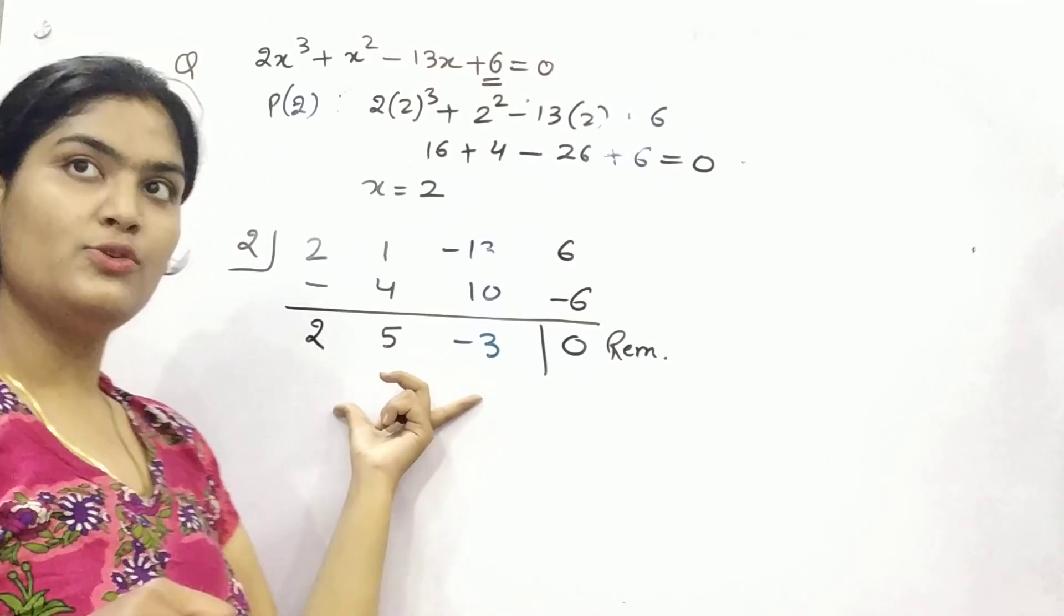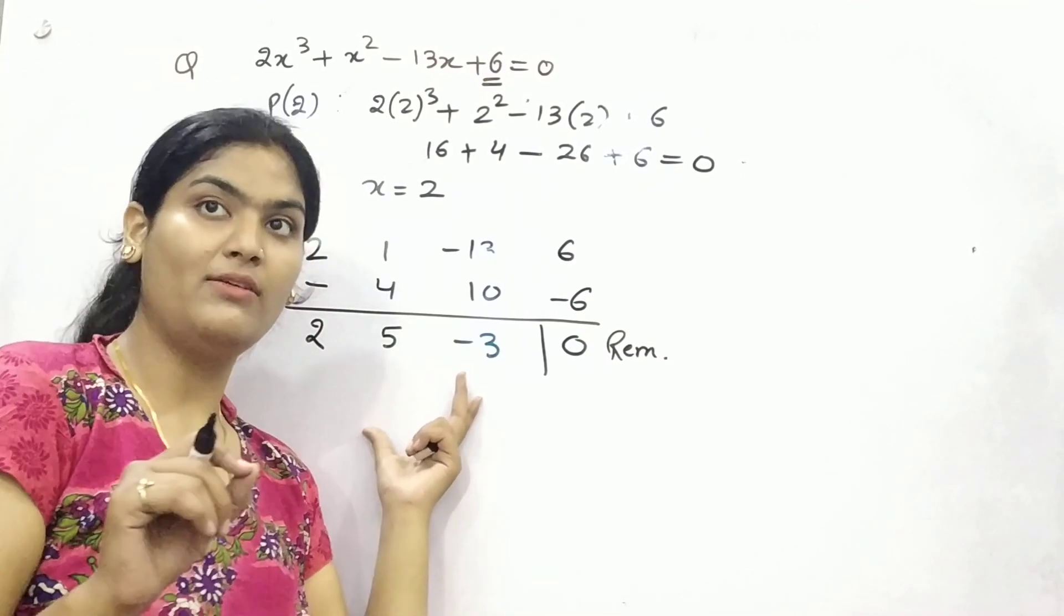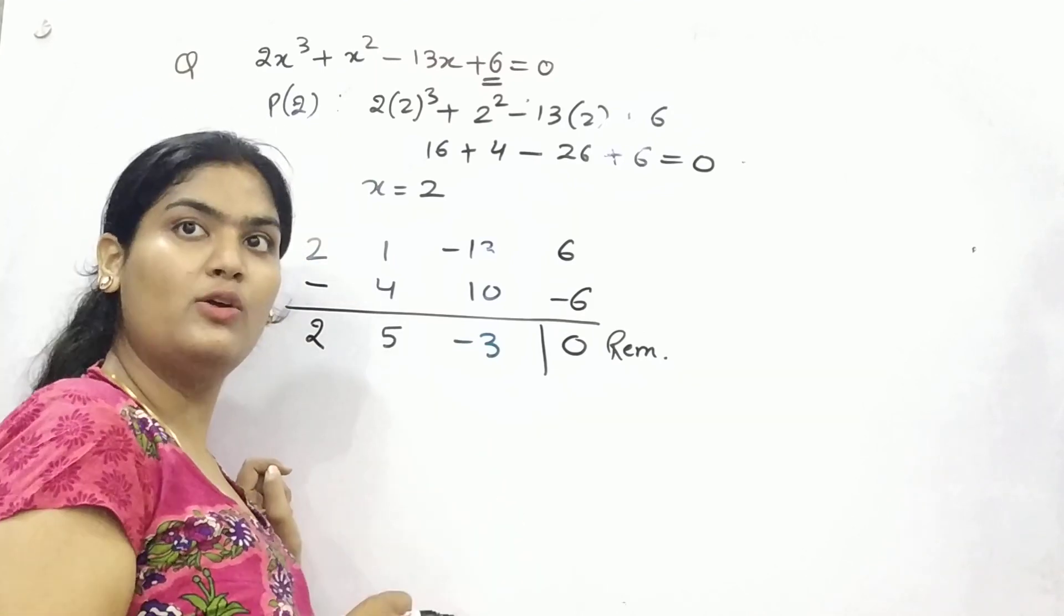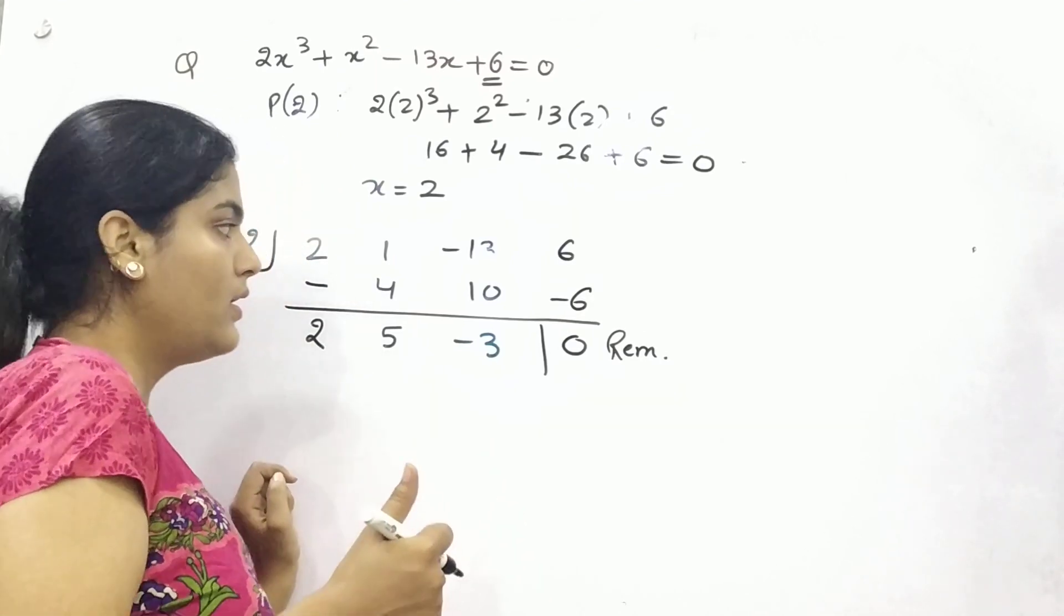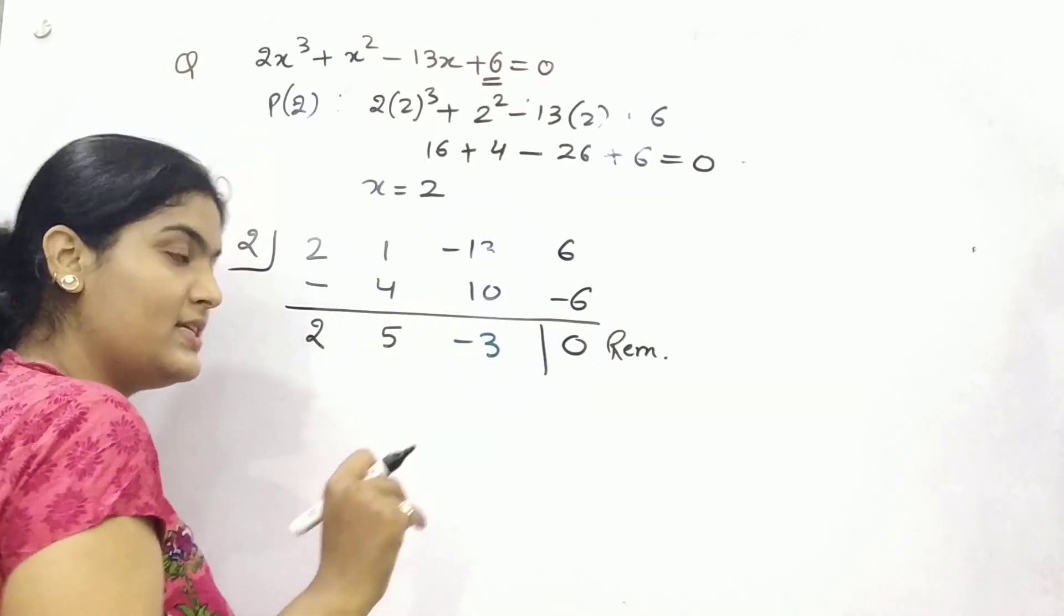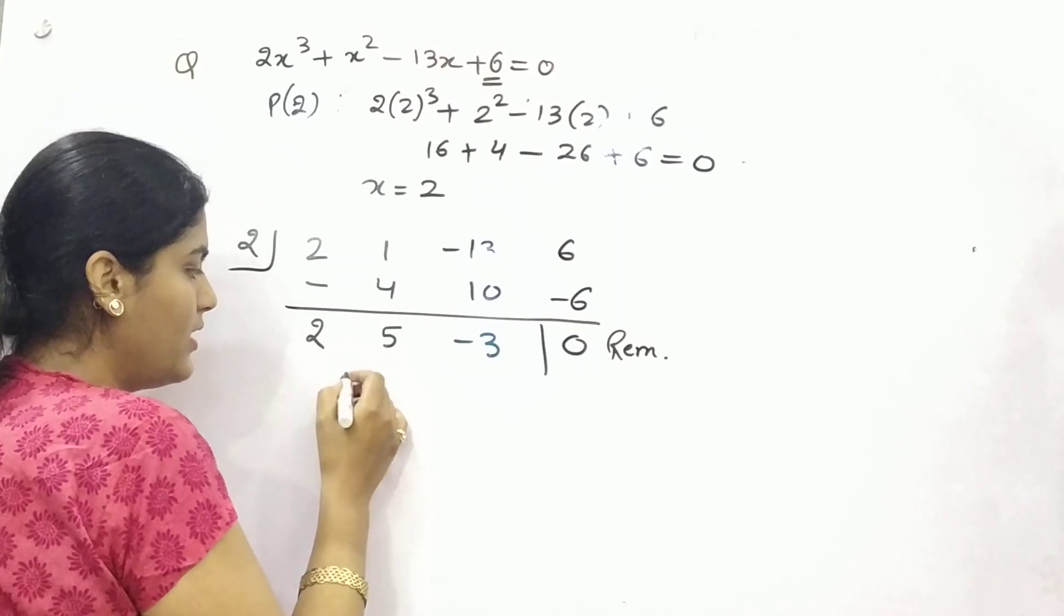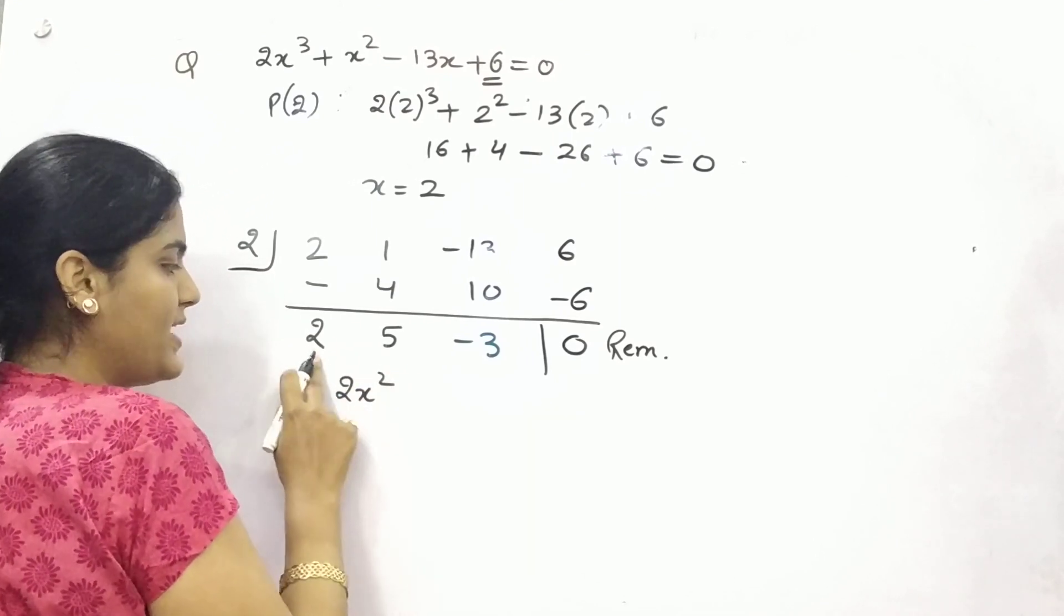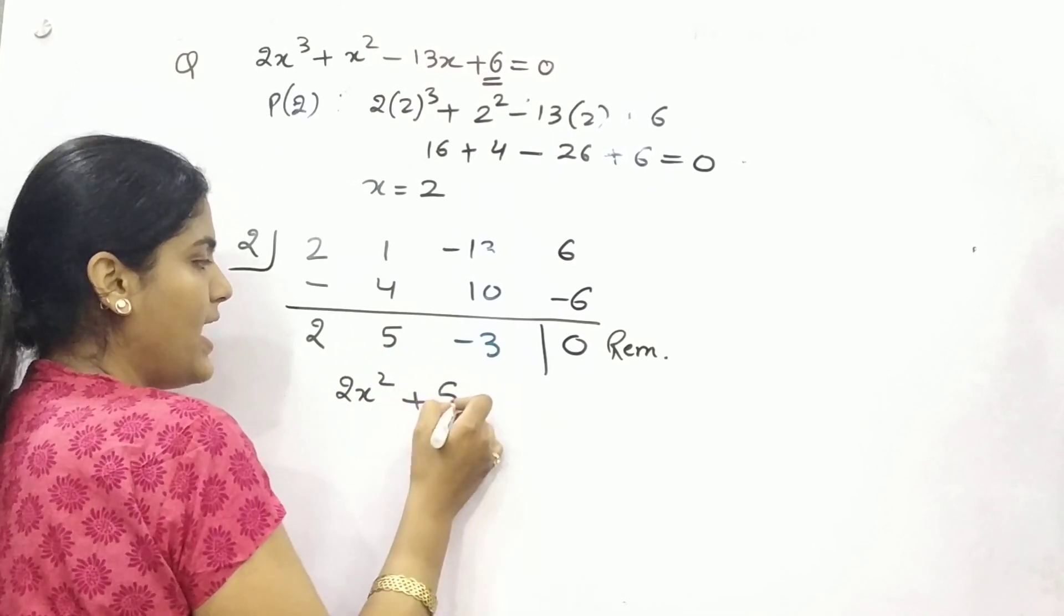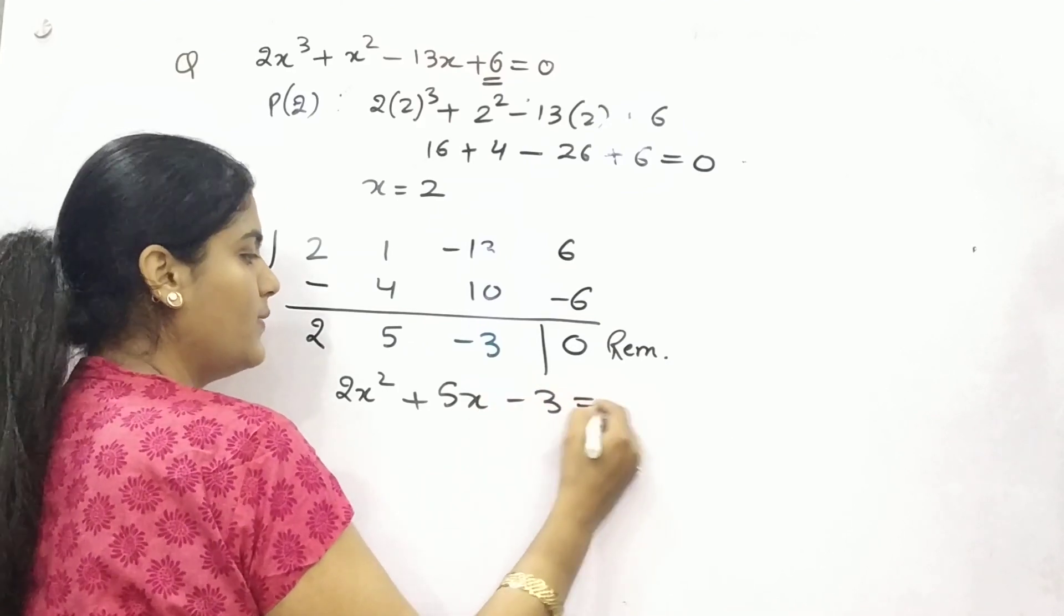Now this is your quotient. And quotient, as you know, it always has degree less than the dividend. So you can see, dividend has degree 3, so it will be of degree 2: 2x² + 5x - 3 = 0.